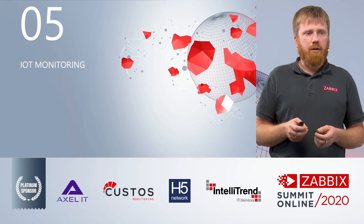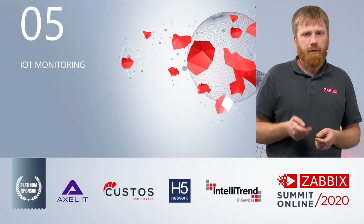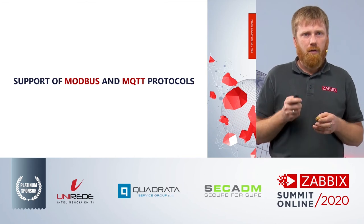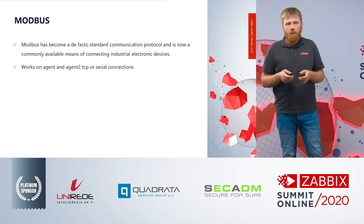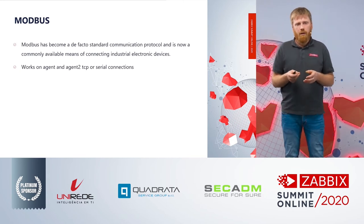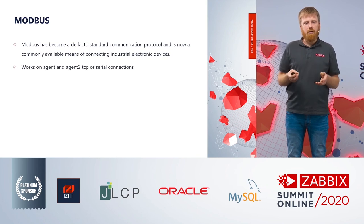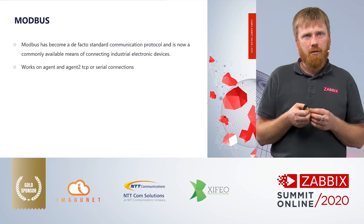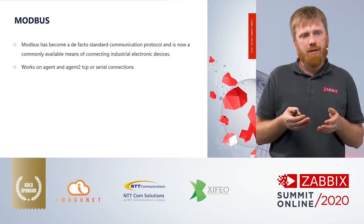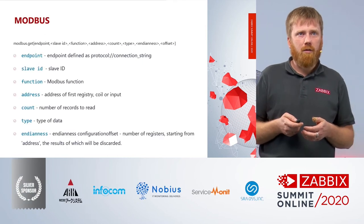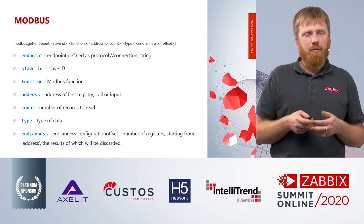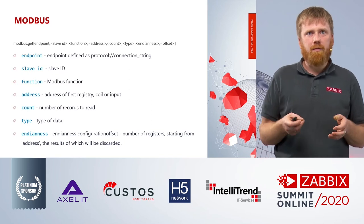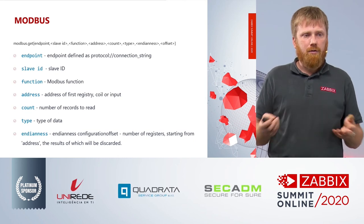Next, a really huge improvement in Zabbix: Internet of Things monitoring. There are two new protocols which Zabbix now supports — Modbus and MQTT. Modbus is a very widely used protocol for accessing and talking to industrial electronic devices, and we have now introduced this protocol into Zabbix. Zabbix agent and agent 2 can now talk Modbus to these devices using TCP or serial connections. There is a new item key, 'modbus.get', which you can use to access this data. You need to provide at least an endpoint, and optionally other parameters. This works from both agents.